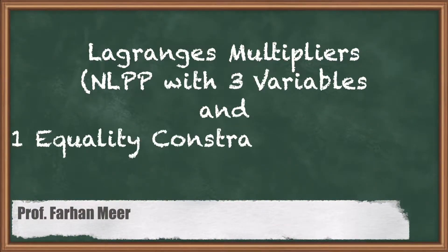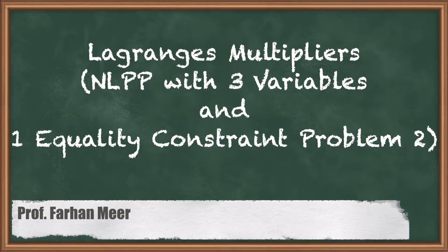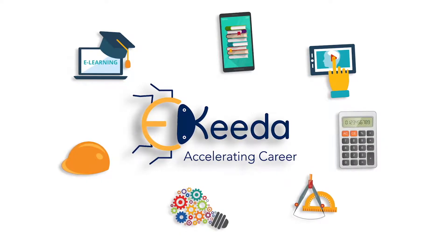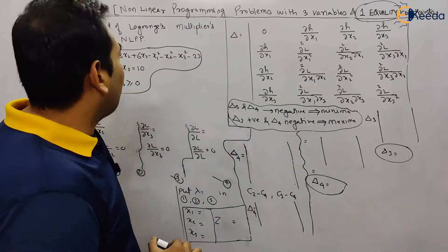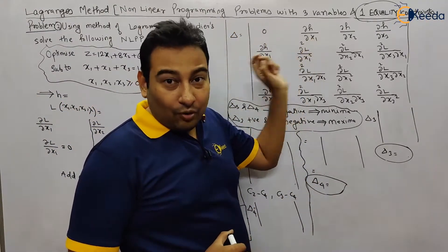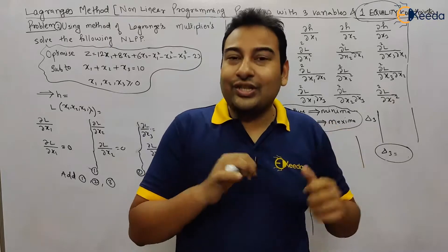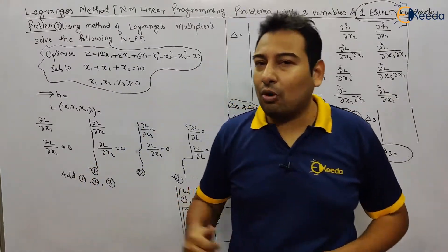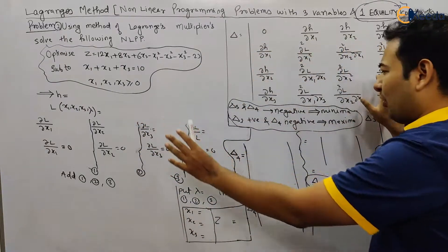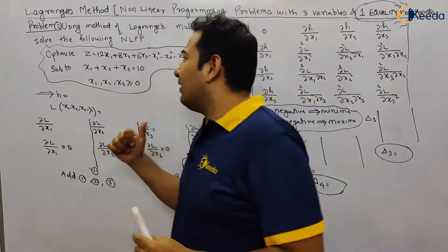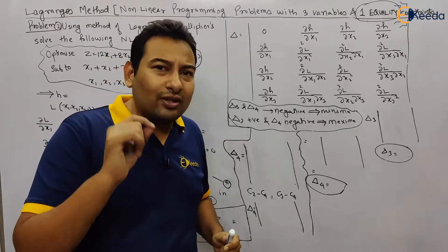Hello friends, in this video we'll be discussing problem number two on Lagrange's multiplier — non-linear programming problems with three variables and one equality constraint. Welcome back friends. Before watching this video, I highly recommend going back and checking the first problem of the same type. This is an exactly similar problem; all the things are written over here, you just need to fill the blanks to get your result. I highly recommend you solve this problem by yourself and verify your result.